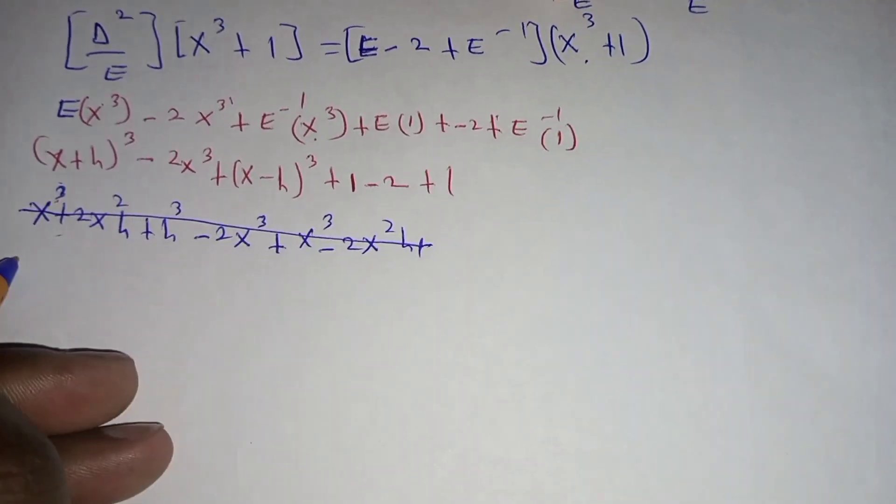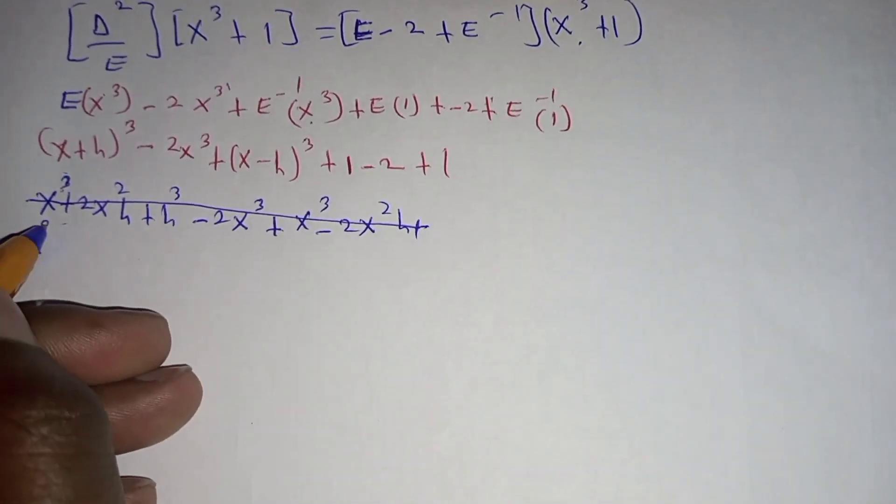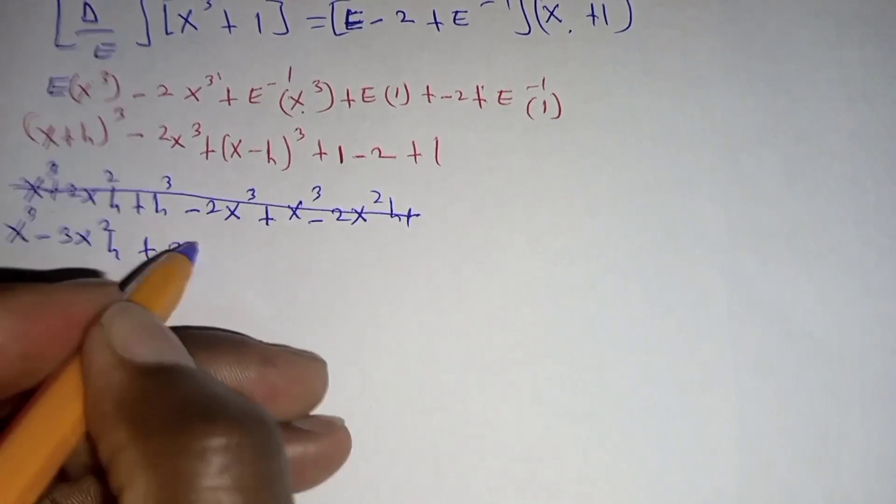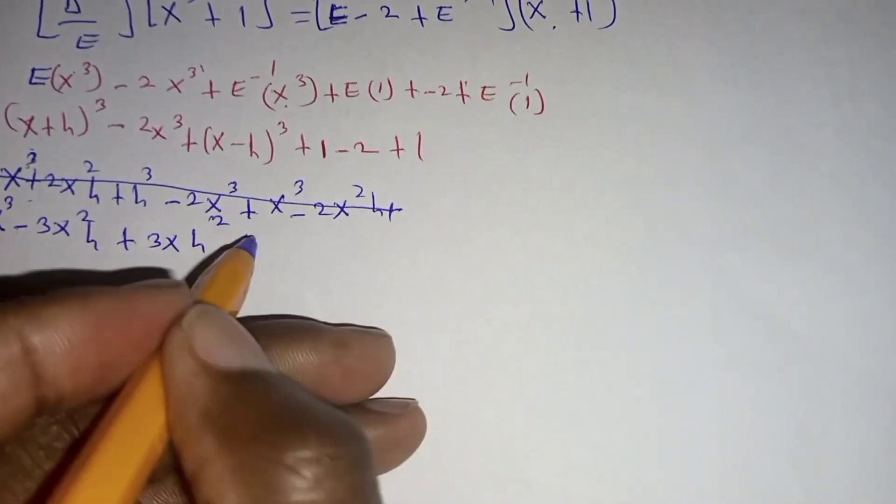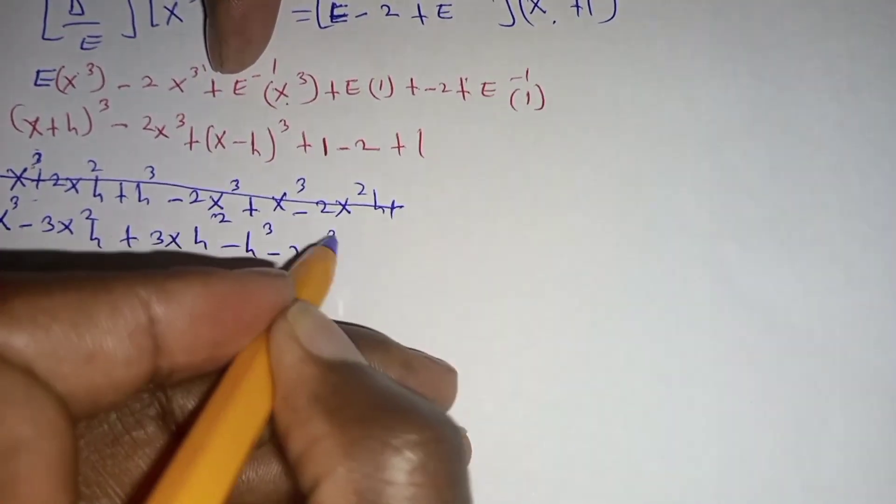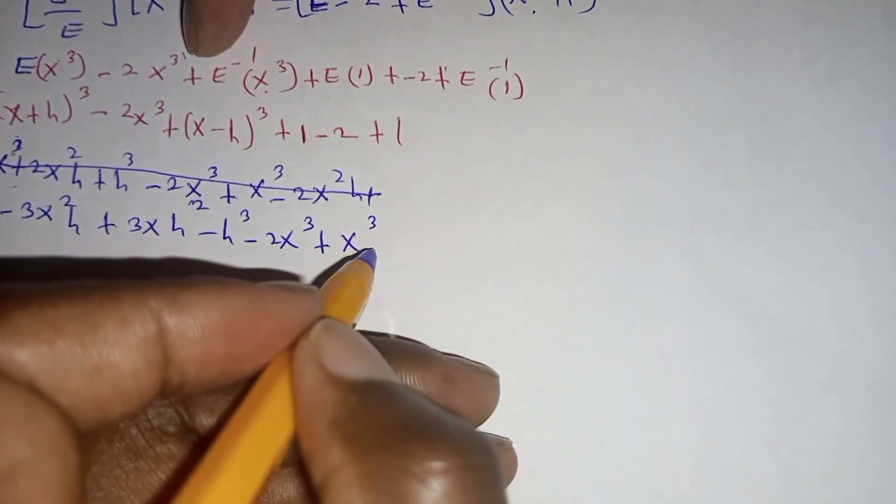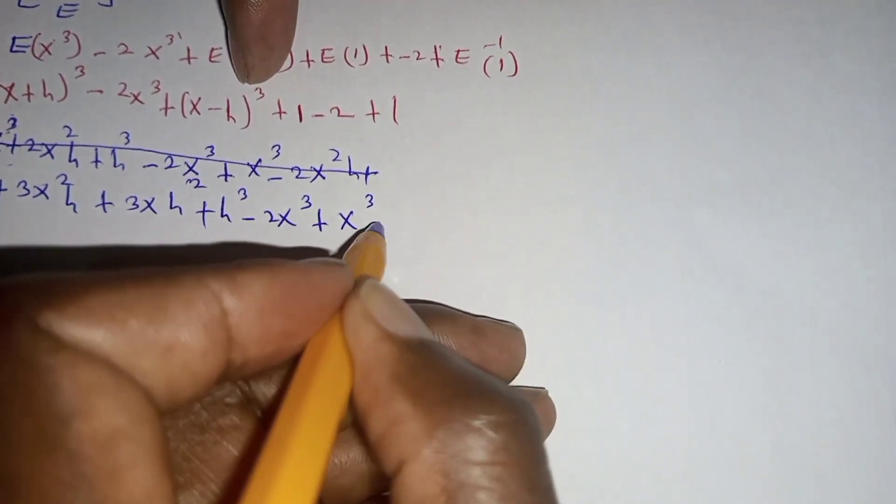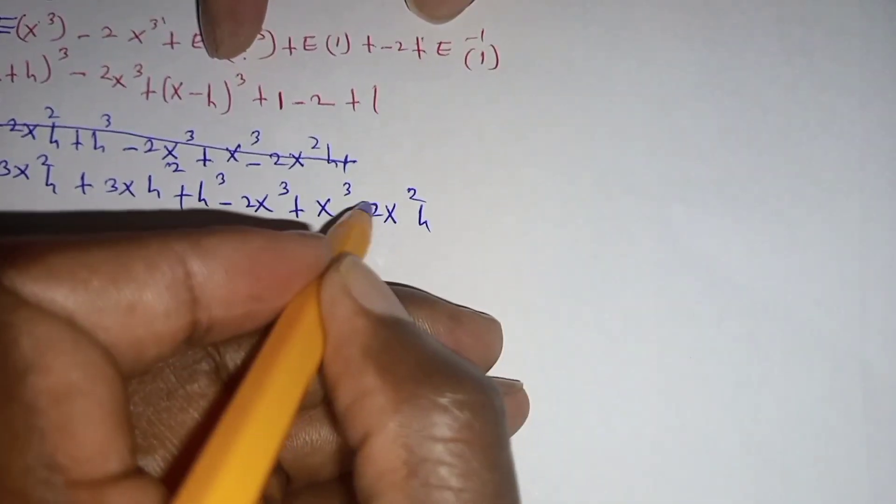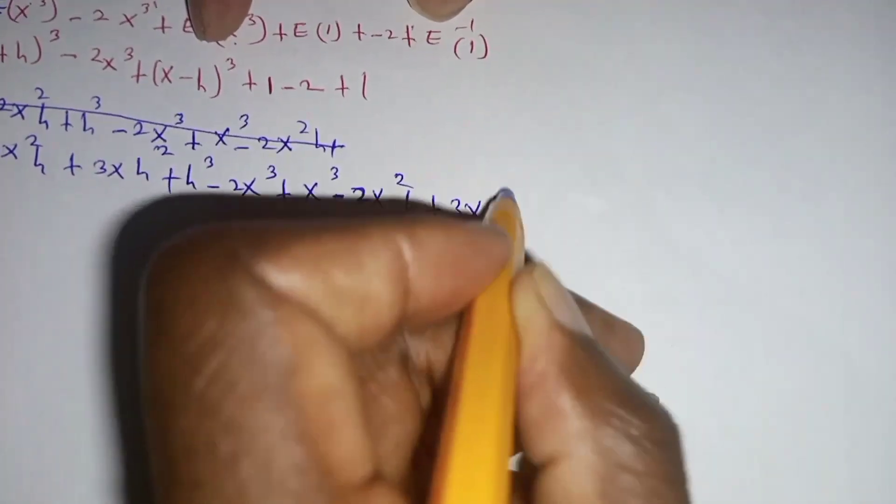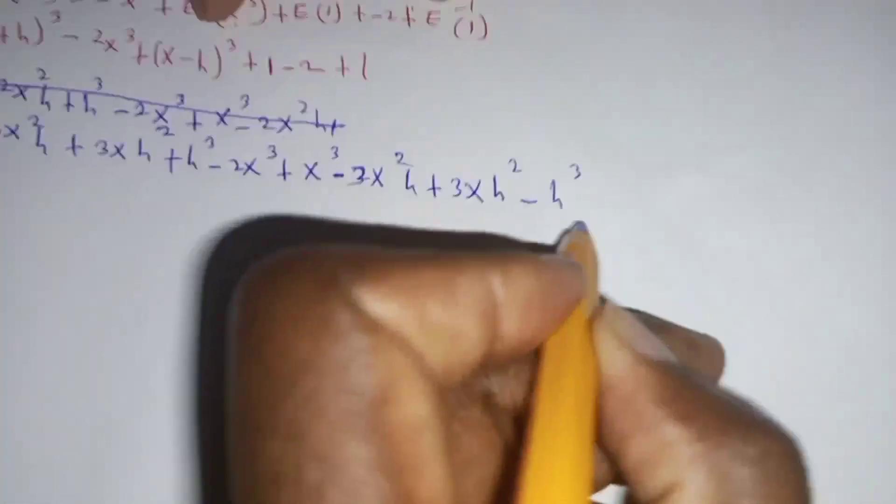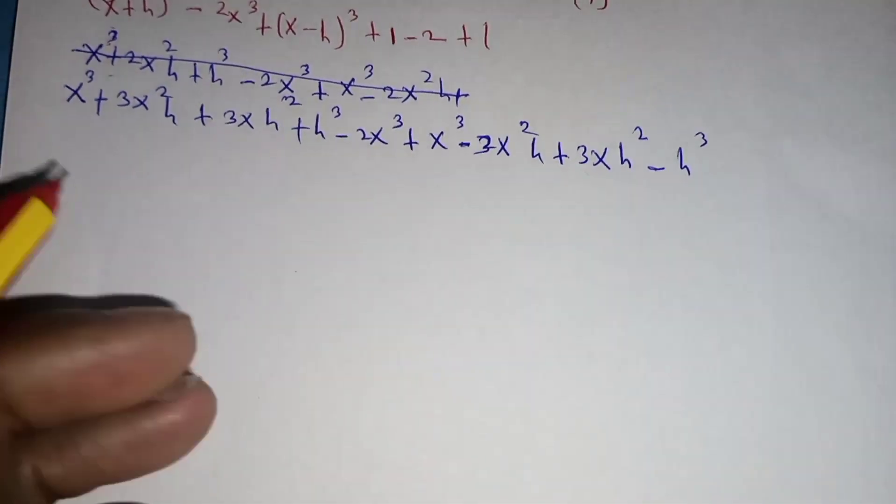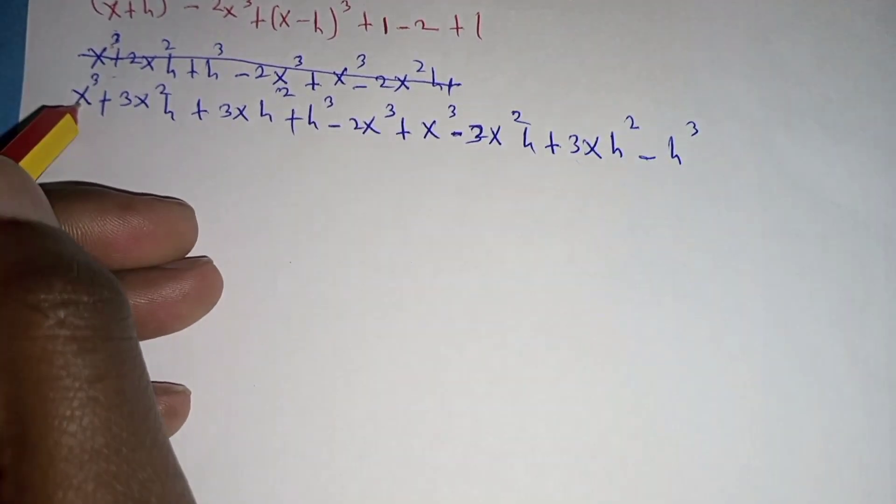When we expanded this by binomial expansion we shall have x cubic minus 3x squared h, then plus 3x h squared minus h cubic. This other part it is minus 2x cubic plus x cubic, plus 3x squared h minus 2x squared h, plus 3x h squared minus h cubic. This part here we will cancel then we see the terms which are unlike.